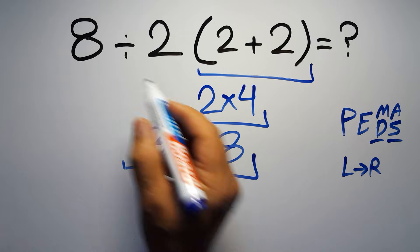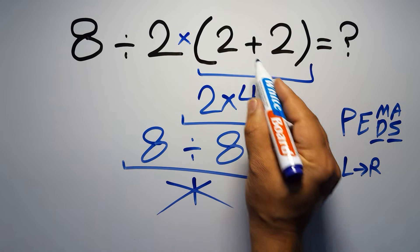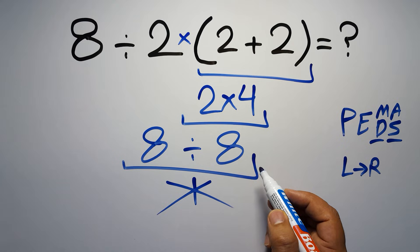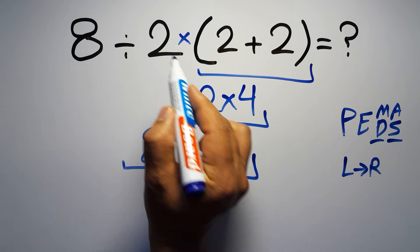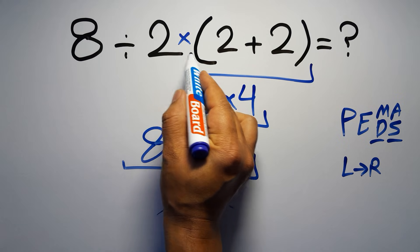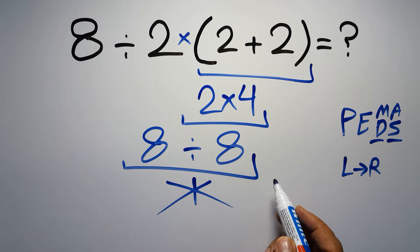In this expression, we have one division, one multiplication, and one parentheses. Inside this parentheses, we have one addition. Here we have a multiplication, because in mathematics, when a number is placed next to parentheses, it means multiplication, and we usually don't write the multiplication sign for brevity.